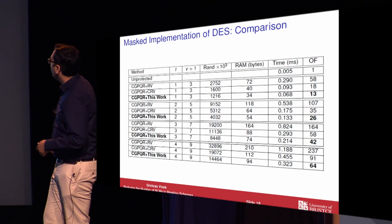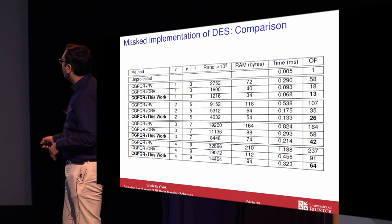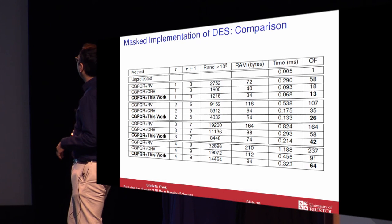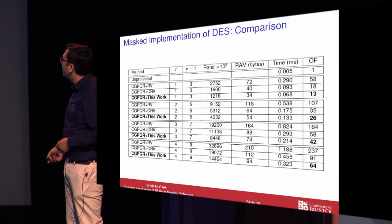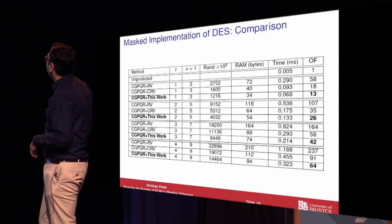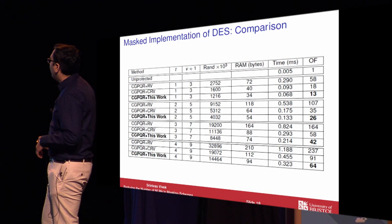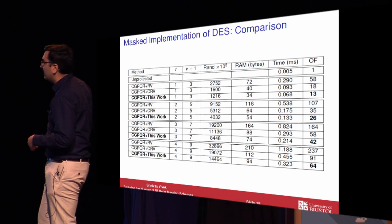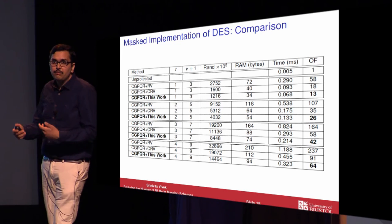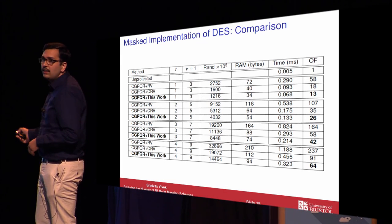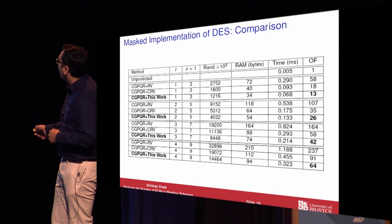These are the timing results. The third column corresponds to the number of shares. For a three-share input, the overhead factor relative to an unprotected implementation is 13 times, compared to the CRV method which has an overhead factor of 18. When there are five shares, the factor is 26 instead of 35. With seven shares it is 42 instead of 58, and with nine shares it is 64 instead of 91. So we get an improvement of at least 25% in the overall running time, and the RAM memory required and randomness complexity are also now lesser.